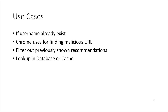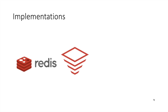Google Chrome uses bloom filter to find out if the URL you are trying to access is malicious or not. It is also used to filter out previously shown recommendations — for example, on an e-commerce website, to find out whether certain recommendations have already been shown to a user. Bloom filters are also used by NoSQL databases and caches to find out if a specific record exists in a node or in the cache, providing a very efficient and fast response.